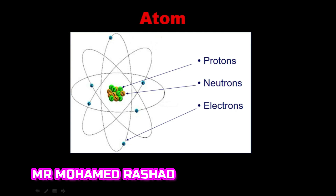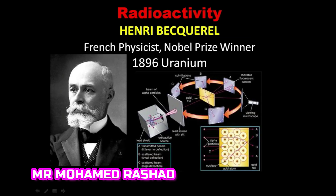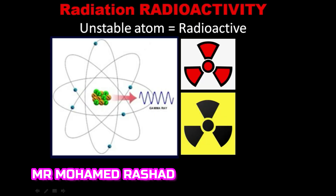The atom consists of neutrons and protons with electrons around it, and it is in a state of stability. In 1896, Henry Becquerel, a French physicist, discovered radioactivity. He discovered it in a special element called uranium and found that the atoms of uranium are not in a state of stability — they are unstable, releasing energy all the time.